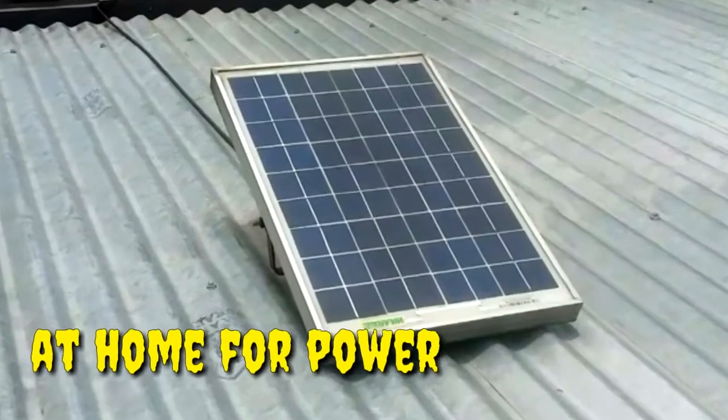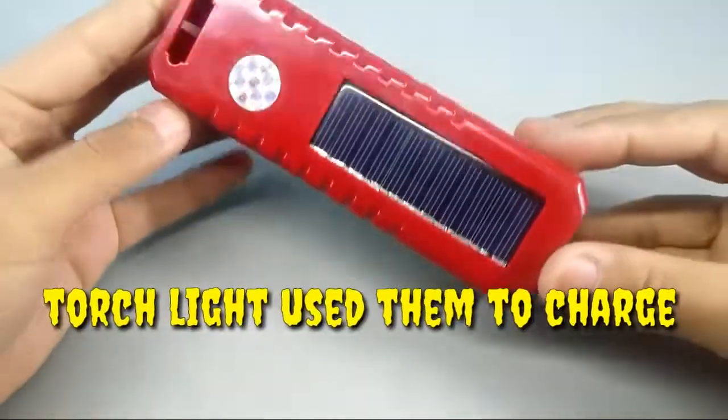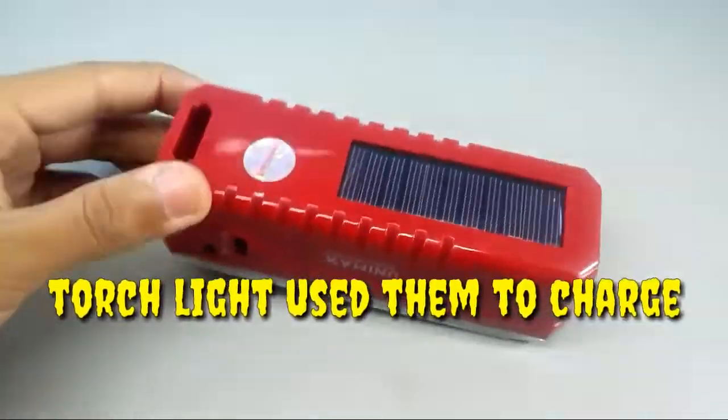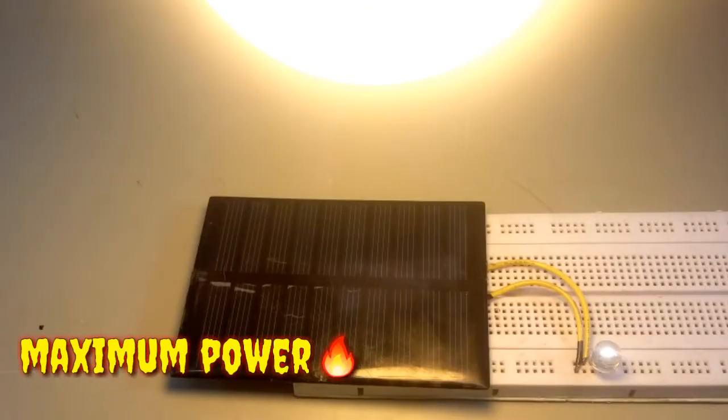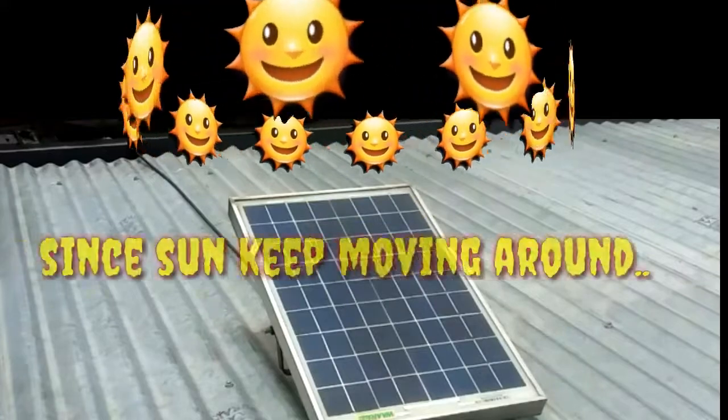Nowadays solar cells are pretty much everywhere. They convert light energy into electrical energy, but their efficiency is only 20% which is very low. Also, the solar cell produces maximum power when the light is perpendicular to its surface. But most solar cells are mounted fixed and maximum energy cannot be extracted.